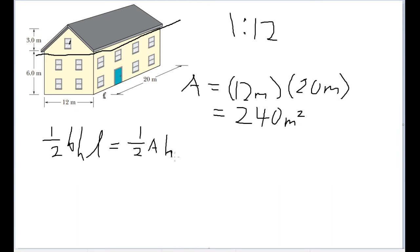This can be rewritten as one half times the cross sectional area times the height, where H is going to be 3.0 meters. We'll also want to have a formula for the lower, more rectangular section of the house as well, the rectangular prism.